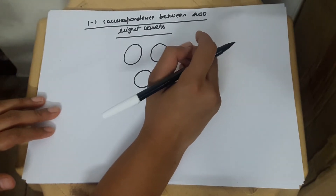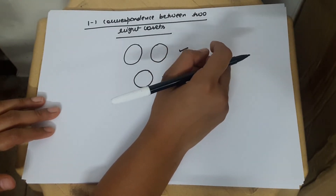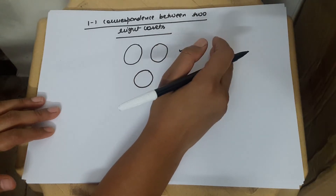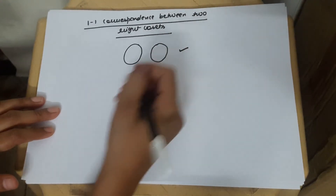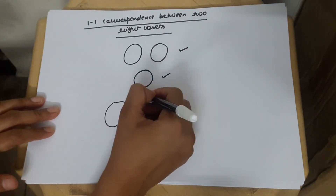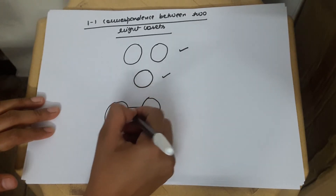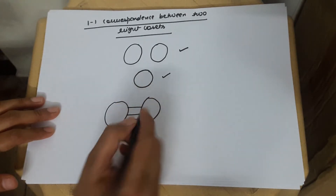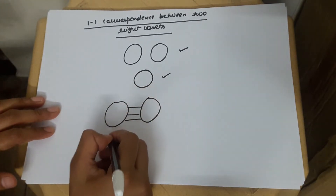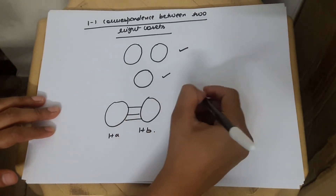Now, in today's video, I am going to explain another relationship between two right cosets: there exists a one-to-one correspondence between two right cosets. Suppose you have two cosets Ha and Hb.